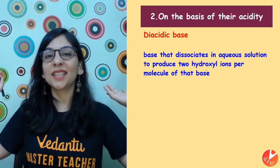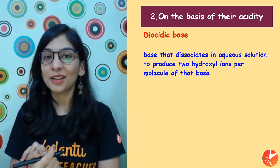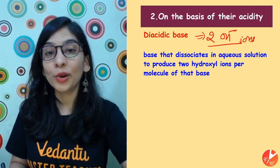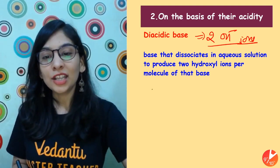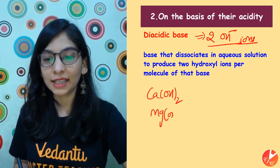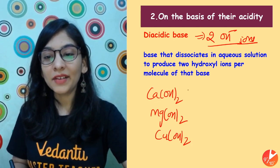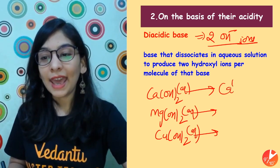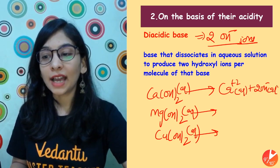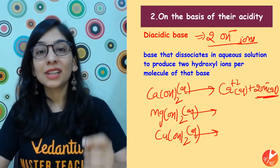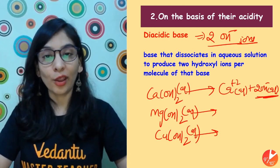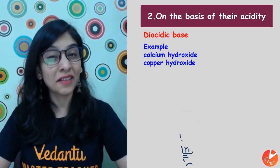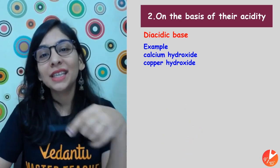For diacidic bases: 'di' means two, so a diacidic base has two OH⁻ ions released when a molecule is dissolved in water. Examples: calcium hydroxide Ca(OH)₂, magnesium hydroxide Mg(OH)₂, copper hydroxide Cu(OH)₂ — every molecule gives two OH⁻ ions, two replaceable OH ions that can combine with an acid. These are diacidic bases.